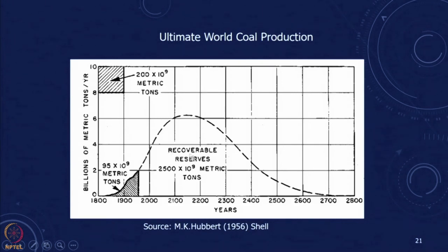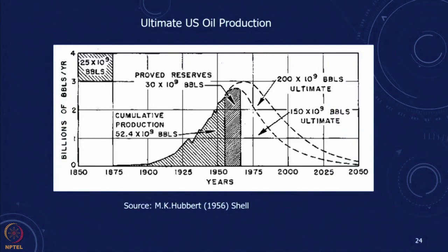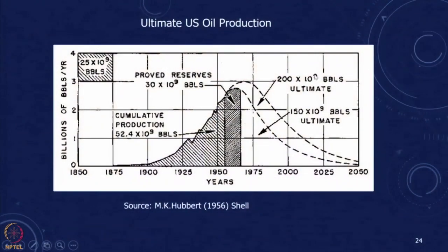He estimated based on the recoverable reserves and fitted a curve of this type for world coal, US coal, and world oil production. Interestingly, he projected the year in which US oil production would peak — the whole concept of peak oil — and it actually happened within a few years of his projection. This represents one of the earliest analyses incorporating a resource limit.